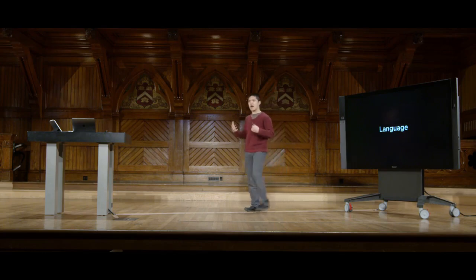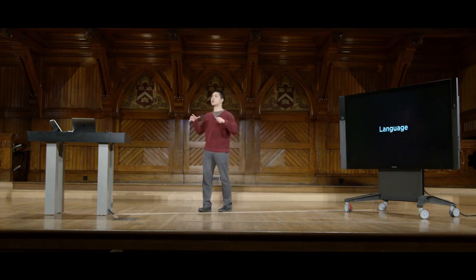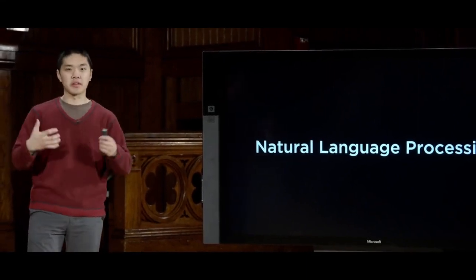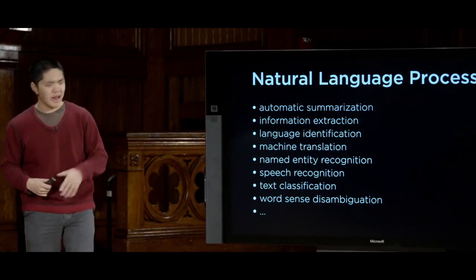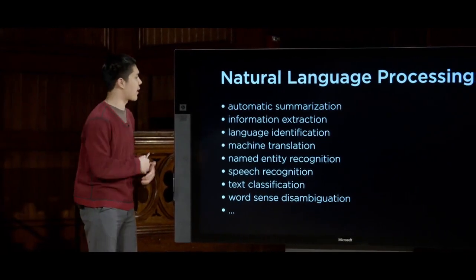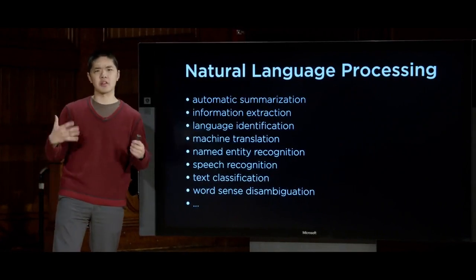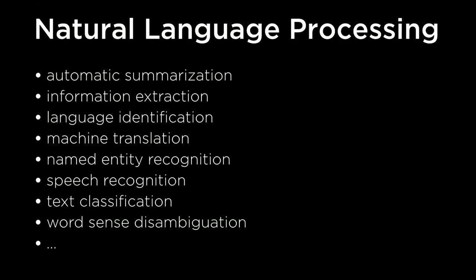This turns out to be a really challenging task for AI, and it encompasses a number of different types of tasks all under the broad heading of natural language processing — coming up with algorithms that allow our AI to process and understand natural language. Some common tasks include automatic summarization, where you give an AI a long document and would like it to summarize it, coming up with a shorter representation of the same idea, still in natural language like English.